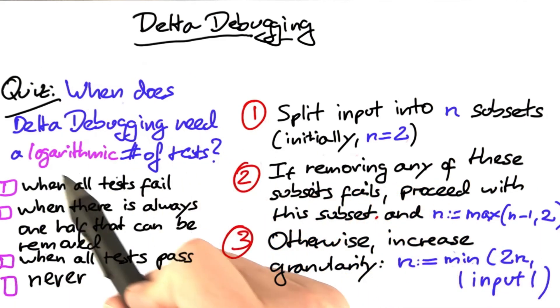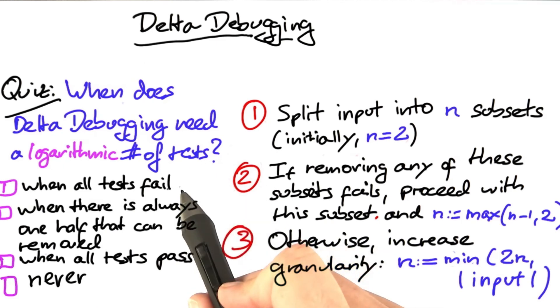So, when does delta debugging need a logarithmic number of tests? Is this when all tests fail? Is this when there is always one half that can be removed and fails? Is this when all tests pass? Or is this never? Check all that apply.